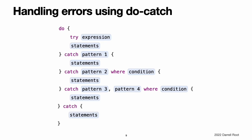Handling Errors Using Do-Catch. You use a do-catch statement to handle errors by running a block of code. If an error is thrown by the code in the do clause, it is matched against the catch clauses to determine which one of them can handle the error. Here is the general form of a do-catch statement. You write a pattern after catch to indicate what errors the clause can handle. If a catch clause does not have a pattern, the clause matches any error and binds the error to a local constant named error. For more information about pattern matching, see Patterns.